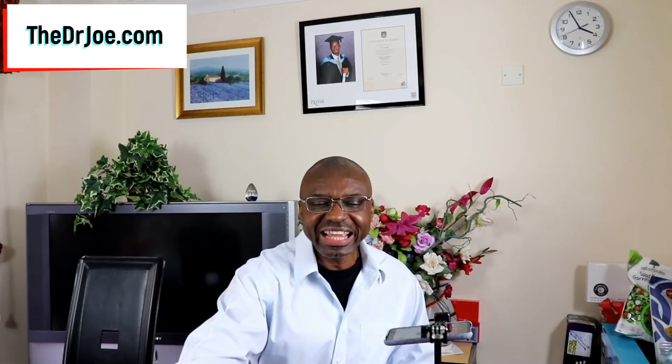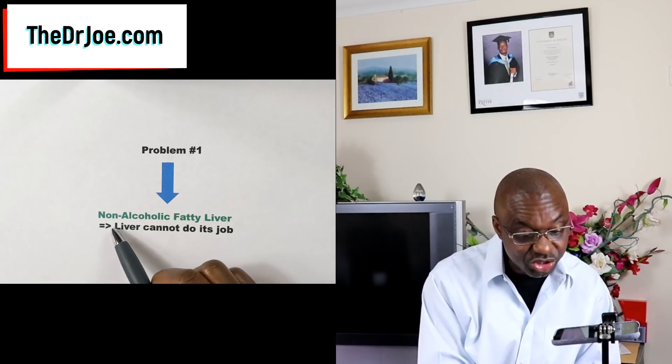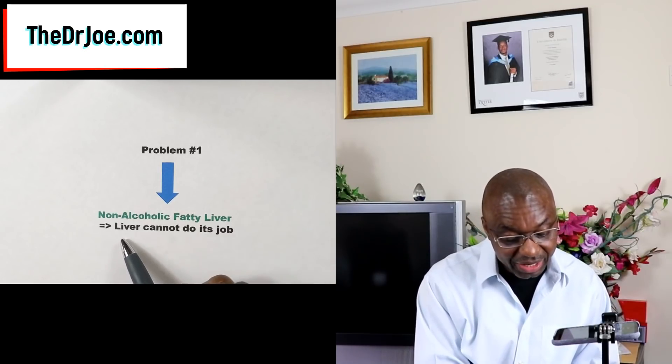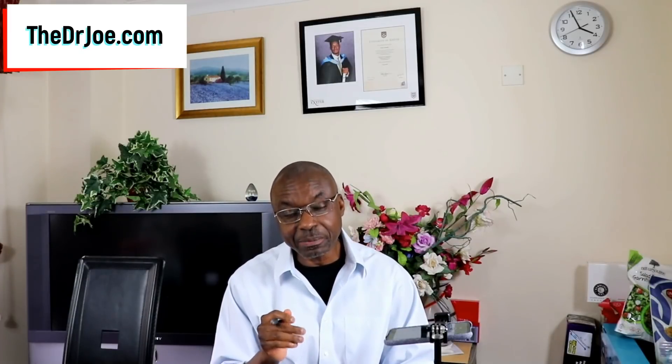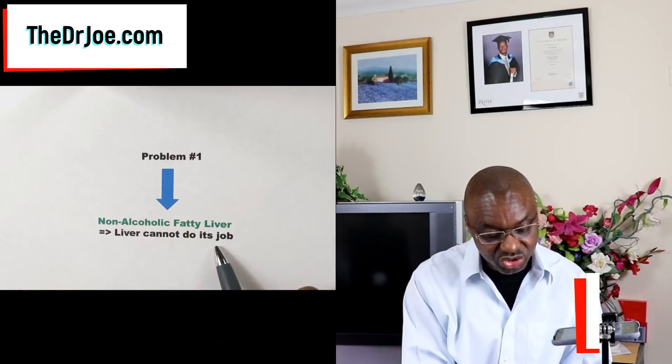Now let's look at the cardiometabolic problems that fructose unleashes in our body. Problem number one is non-alcoholic fatty liver. What happens is the liver becomes impregnated with so much fat that it is unable to do its job. And if unresolved at this stage, it will progress to what we call NASH — non-alcoholic steatohepatitis. That is problem number one unleashed by fructose.